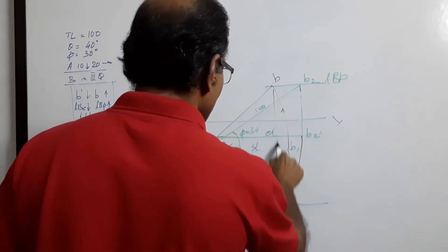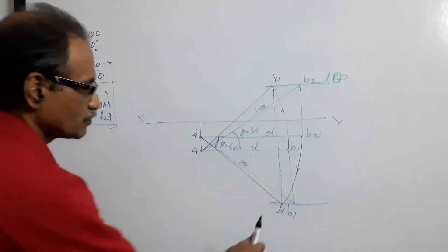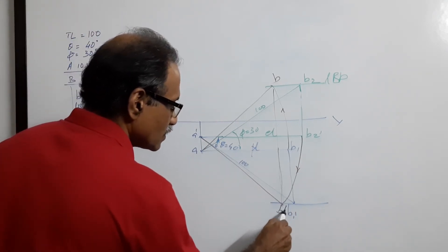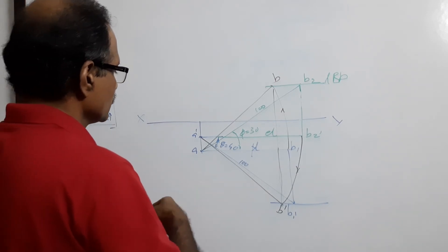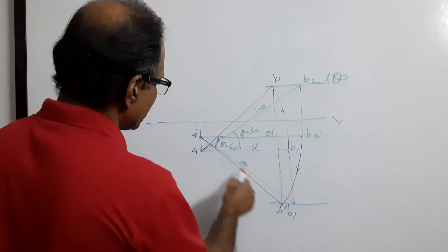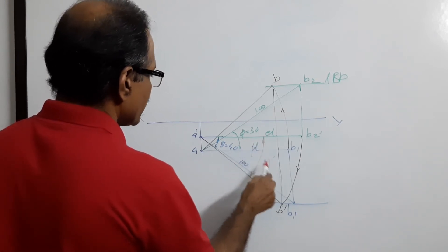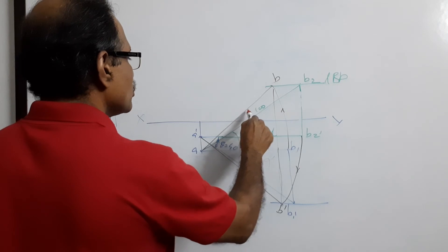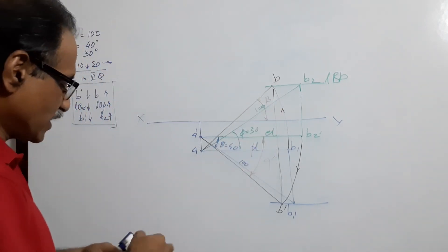If you connect B and draw a vertical through B, it will pass through B dash. This is the elevation A dash B dash, it will make alpha to XY. This is the plan, this will make B dash B dot XY.